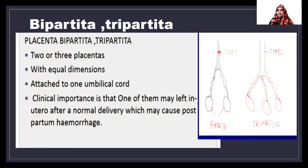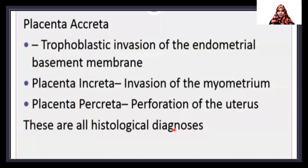Bipartite and tripartite placenta: as the terms suggest, bipartite consists of a two-lobed placenta and tripartite consists of a three-lobed placenta, with the lobes uniting to the cord. Two or three placentas of equal dimension attach to the umbilical cord. The clinical importance is that one of them may be left in the uterus after normal delivery, which can cause postpartum hemorrhage.